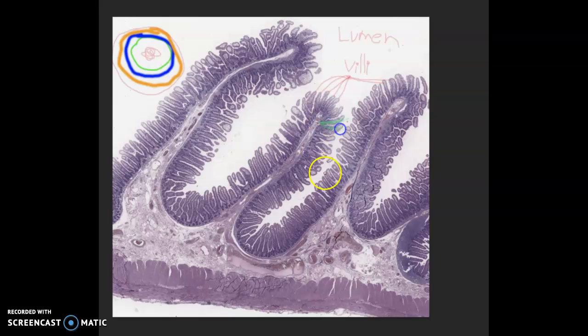This layer right here, so basically from here, why is this so opaque? It's from here to here is called the mucosal layer. So from here to here, that is all mucosal. So from here to here, that is all mucosal.